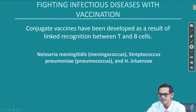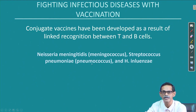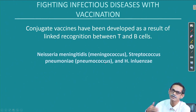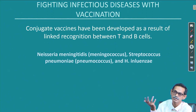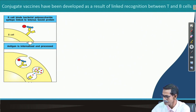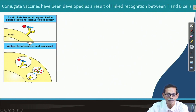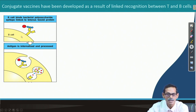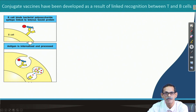The bacteria targeted include Neisseria meningitidis, Streptococcus pneumoniae, and Haemophilus influenzae. These bacteria produce polysaccharides against which we need vaccination. Coming back to immunology — how does the immune system react? Take a B cell with a particular B cell receptor which can recognize the polysaccharide on the outside of the bacteria.